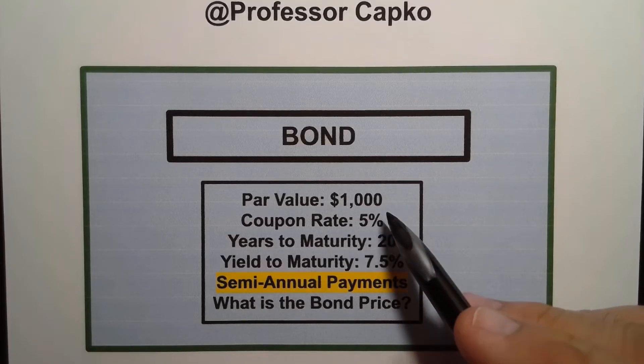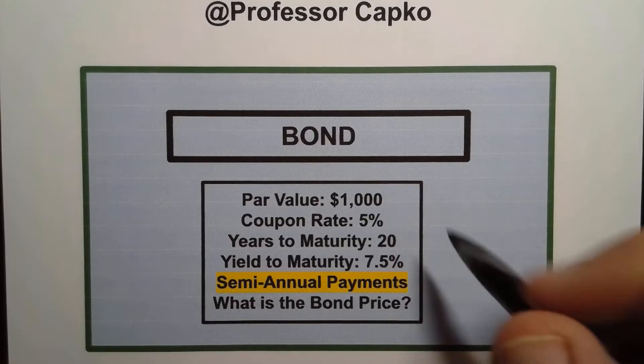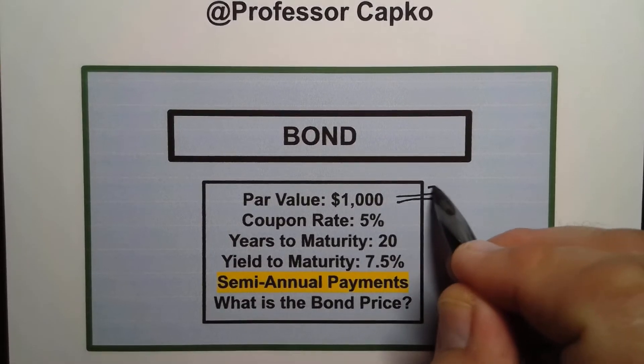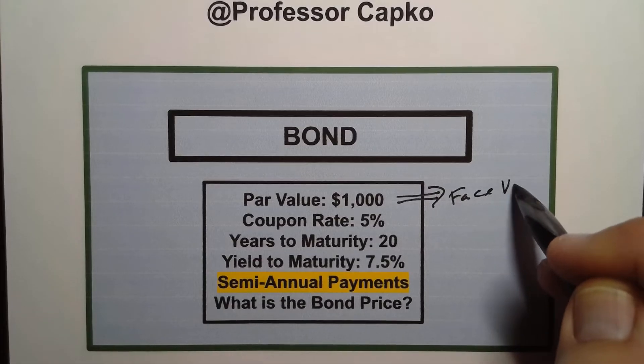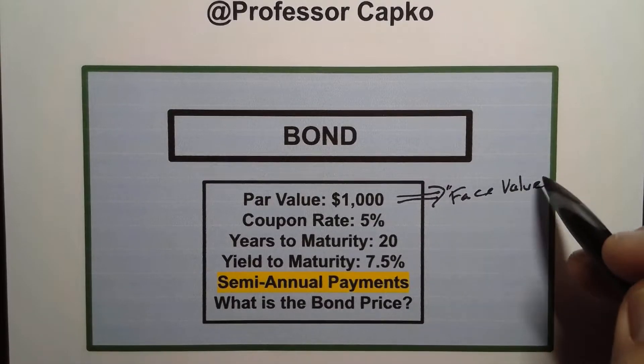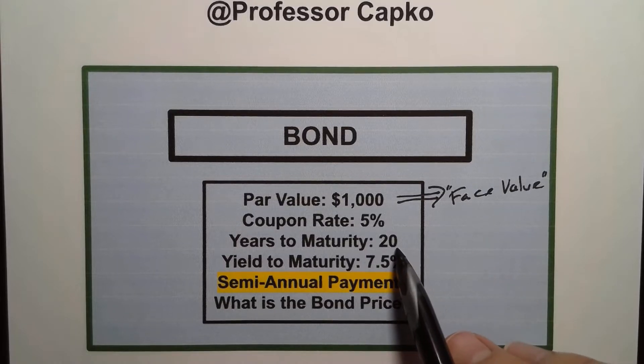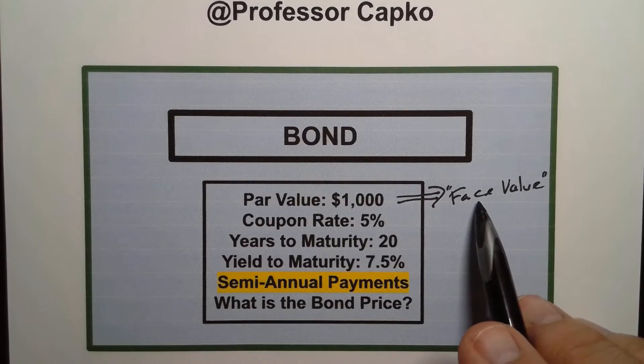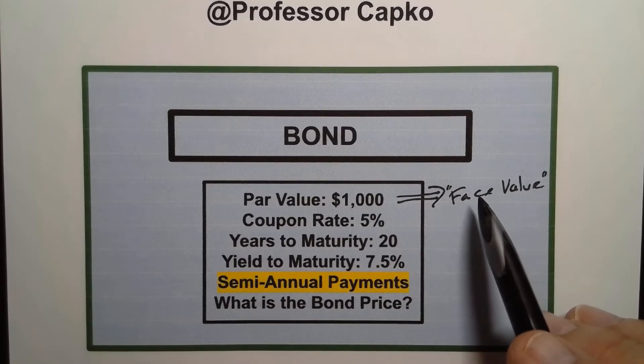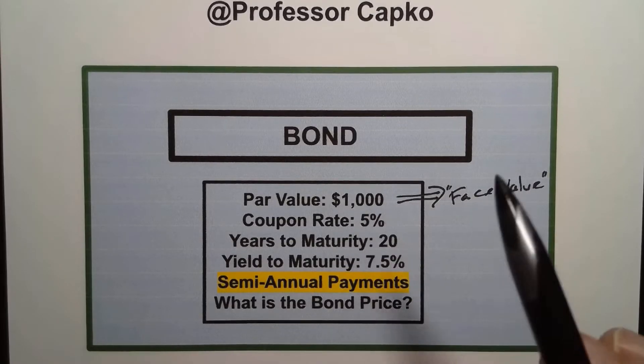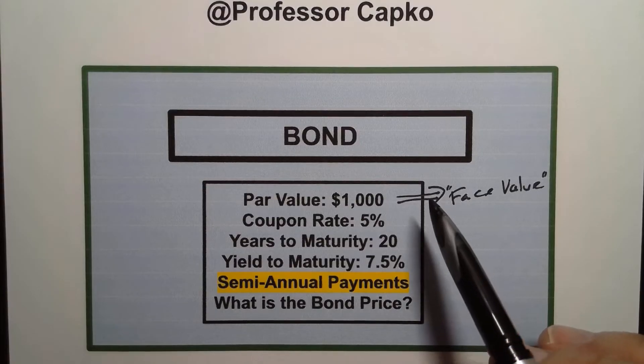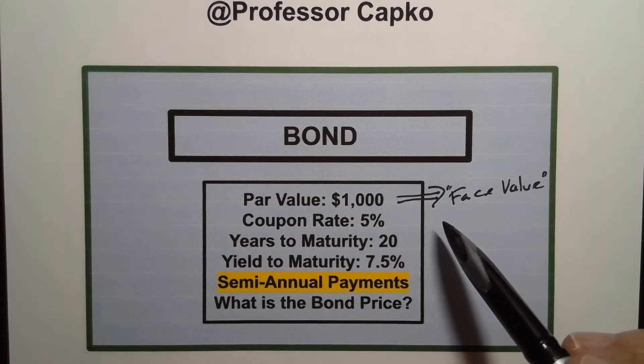So this one we're going to have a par value of $1,000. This is also known as the face value. In other words this is the amount of money that you're going to be repaid at the maturity of the bond. So when the bond matures in this case at the end of 20 years the bond will pay you the bond holder the face value in this case $1,000. Many bonds are in these $1,000 increments not all of them but that's a common increment for some of these bonds.